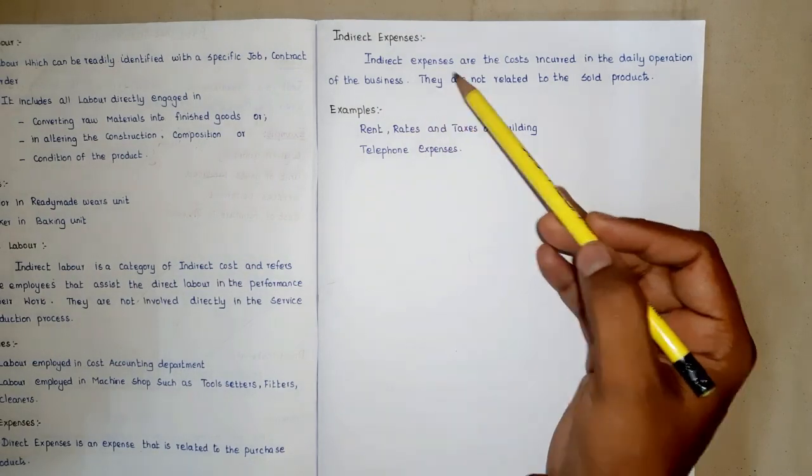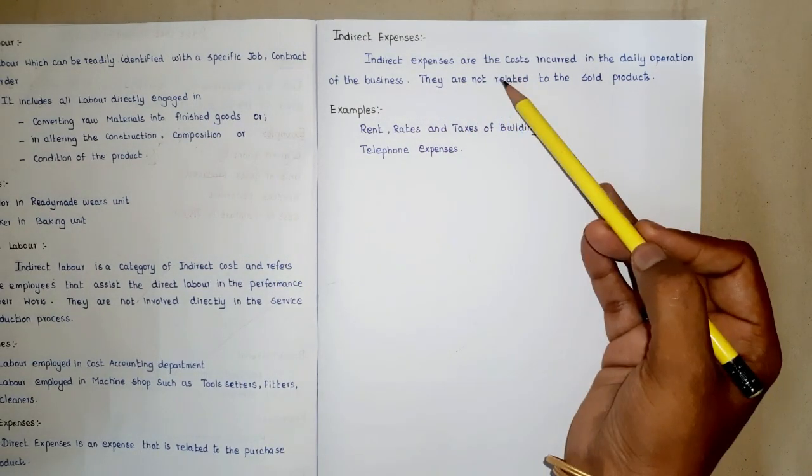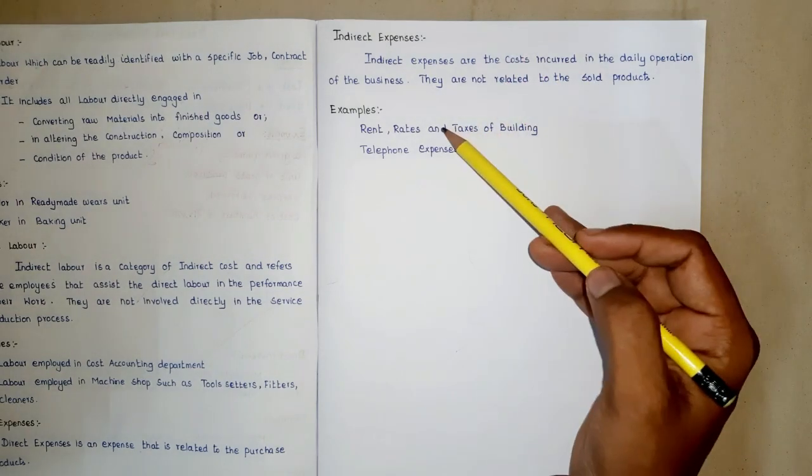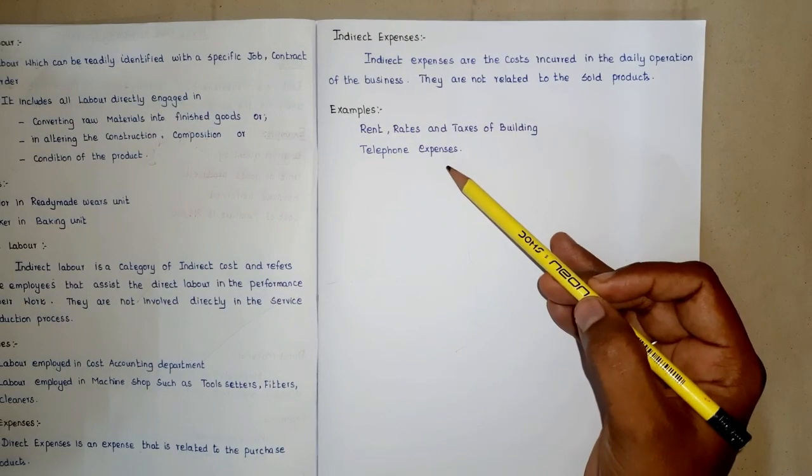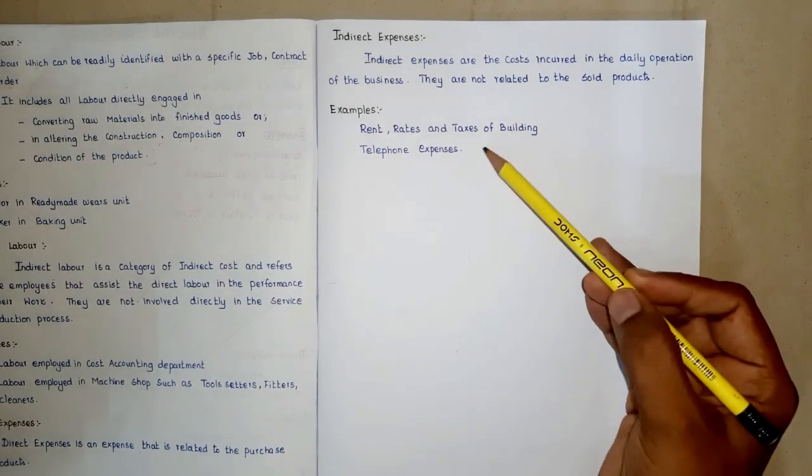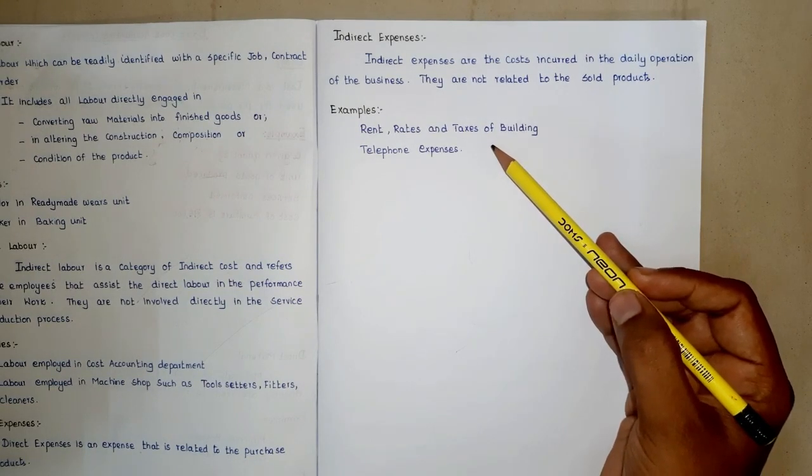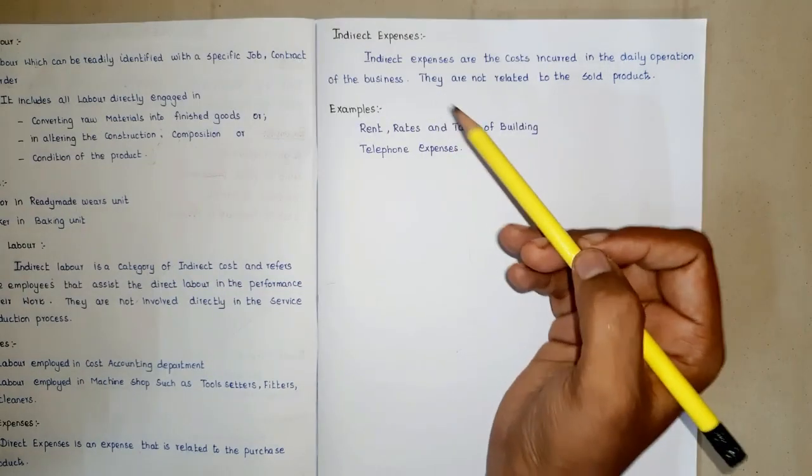The next part is indirect expenses. Expenses incurred to sell goods and to operate the business are called indirect expenses or otherwise called as operating expenses. Example: if a machine is hired to complete a particular product, then the hire charges paid for that machine is the direct expense of that particular product.